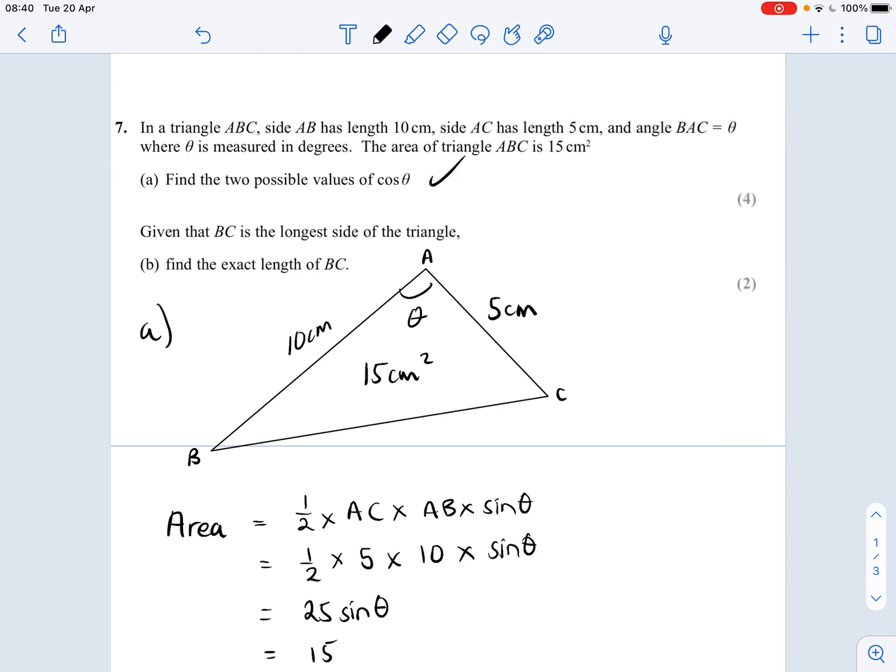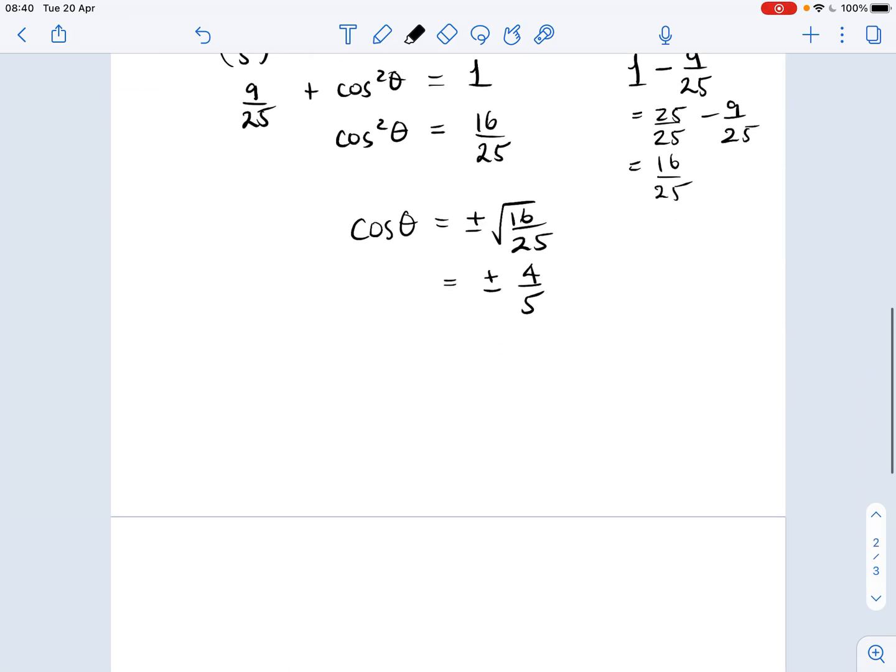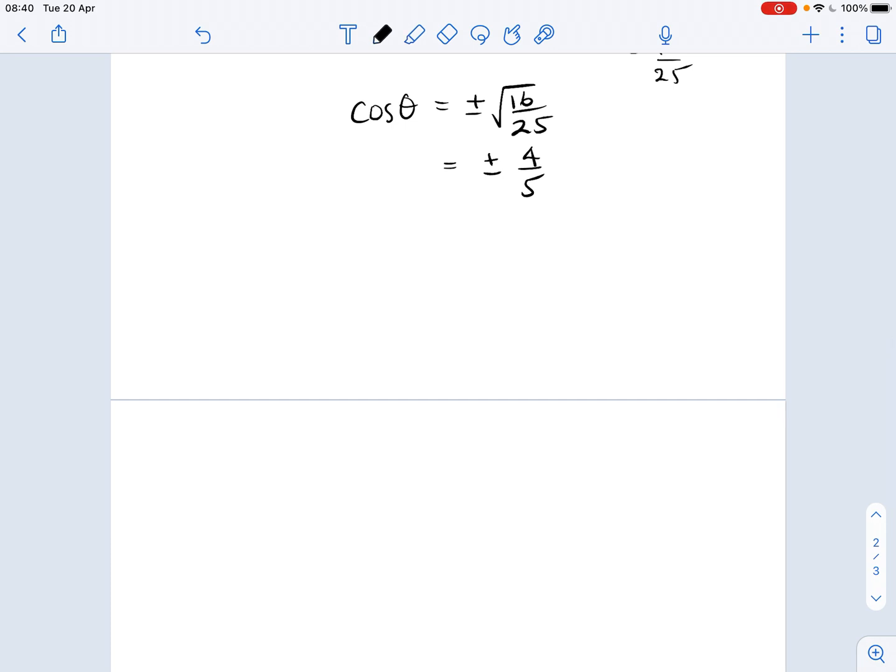Okay, given that BC is the longest side of the triangle, which is quite accurate from our diagram, find the exact length of BC. So now I'm going to use the cosine rule. So the cosine rule, in original format, is c squared equals a squared plus b squared minus 2ab cosine c.